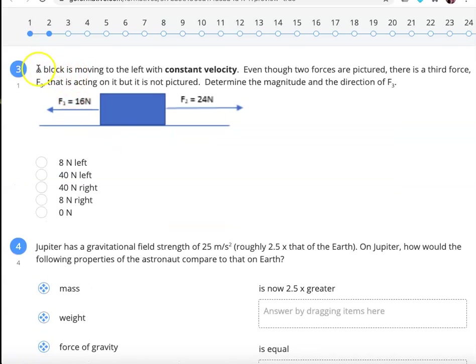The key word for number three is this block is moving to the left with constant velocity. Constant velocity is a special term. Every time you see constant velocity, I want you to think to yourself that that means dynamic equilibrium. Every single time you see constant velocity, think forces are balanced. And if forces are balanced, that means the object in motion stays in motion. It's already moving to the left, so it's going to continue moving to the left at constant speed. But only if we have eight newtons left to make the net force zero.